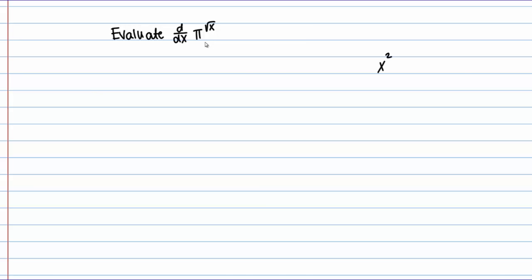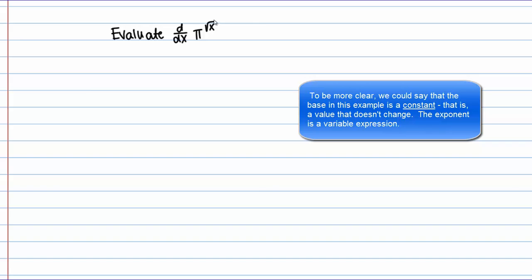The power rule applies to situations like X squared — the derivative of X squared is 2X. But that's different from what we have here. In X squared, my variable is the base and a number is the exponent. But here I have the opposite: a numeric base and my exponent is X, or in this case a function of X. So I do not want to use the power rule here. Instead I want to use rules for the derivative of a general exponential function.